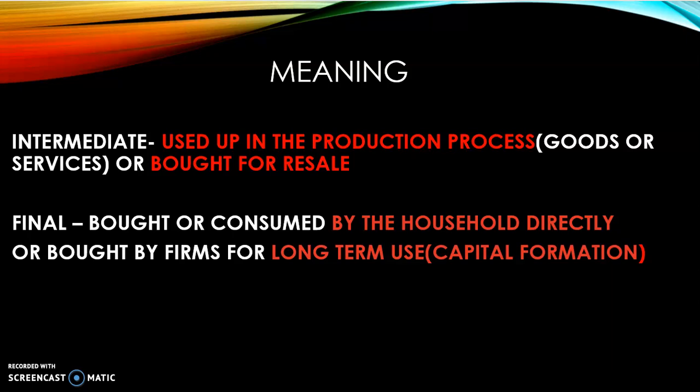Intermediate goods — you have to identify two types. Either it is used up in the production process — whether that is production of goods or services. For example, if I am producing a t-shirt, cotton is used in it. Cotton is used up in producing the t-shirt, so cotton becomes an intermediate good.